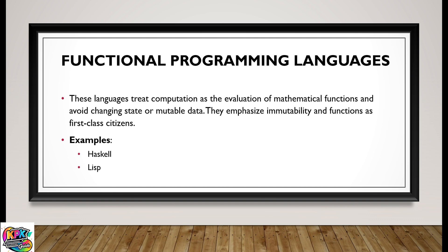Functional programming languages treat computation as an evaluation of mathematical functions and avoid changing state or mutable data. They emphasize immutability and functions as first-class citizens. Examples of such languages are Lisp and Haskell.